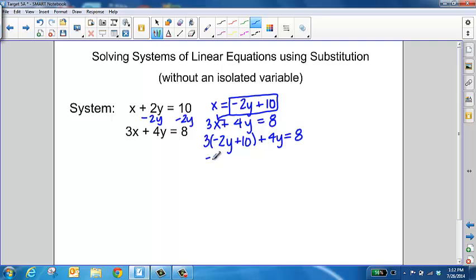If we distribute the 3 to that expression, we get -6y + 30. Drop down our +4y and equals 8. Combining your like terms, you get -2y + 30 = 8. Then subtract 30 from both sides to get -2y = -22. Divide both sides by -2, and you get y = 11.